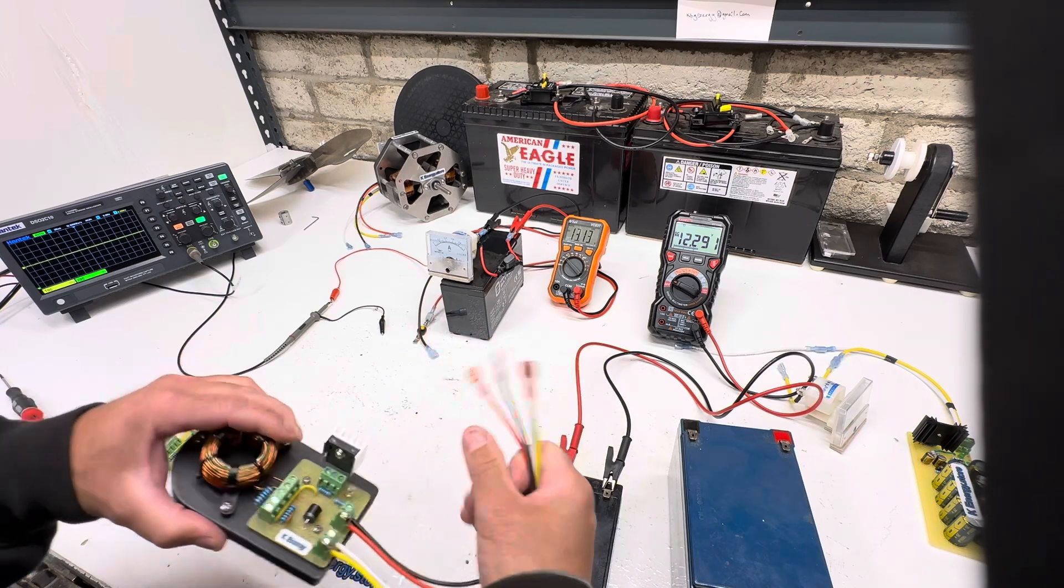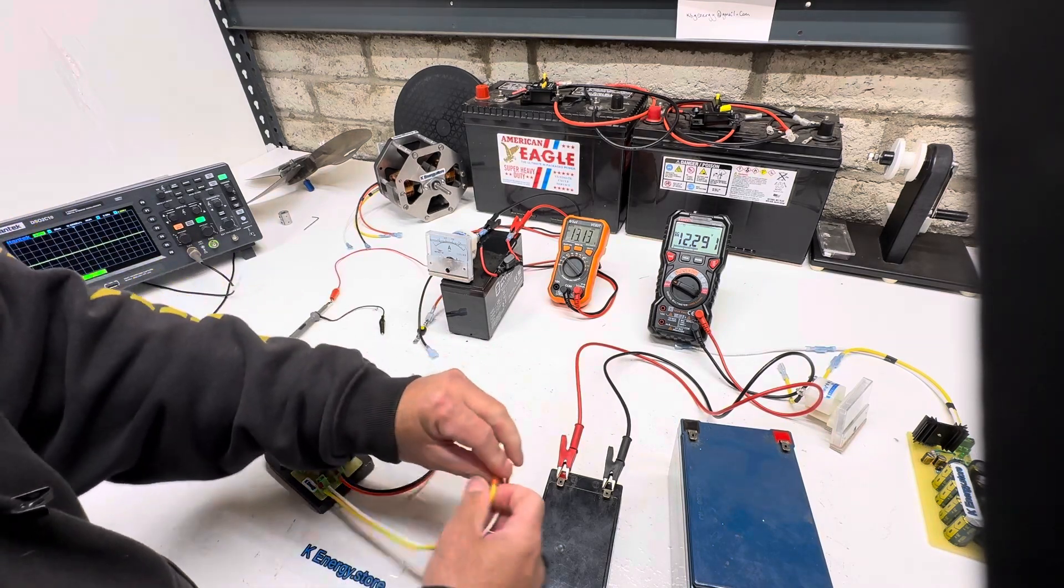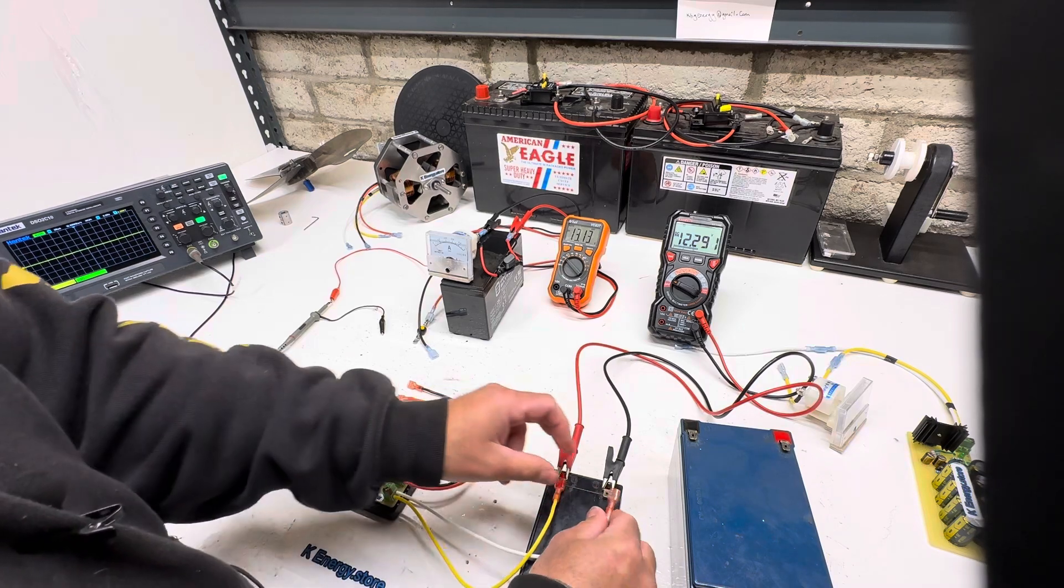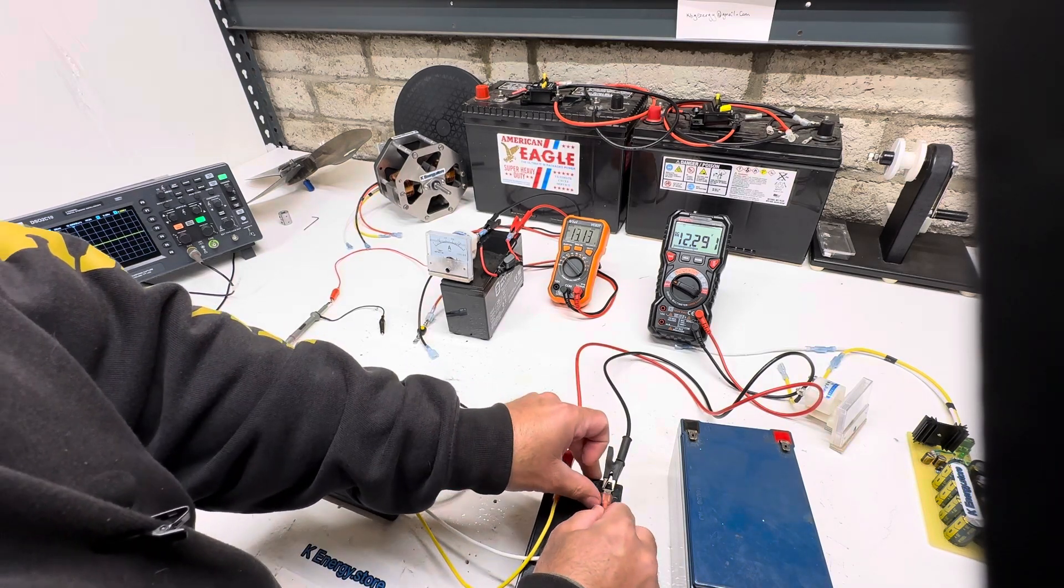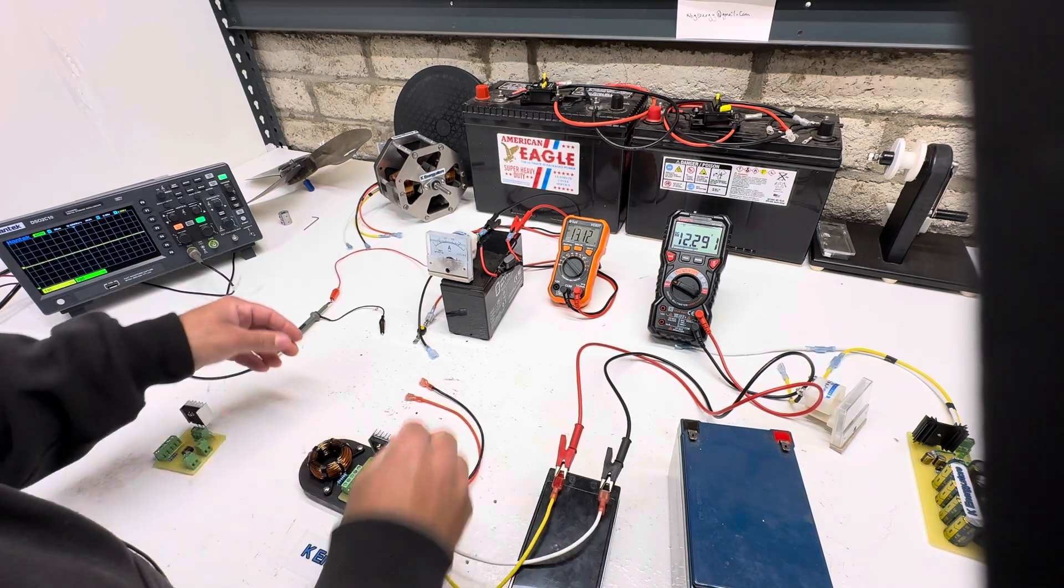Let's just hook this up to this battery. This is the 3.3 amp hour and you can see it's sitting at 12.29. I've been running it down so we could do these experiments.